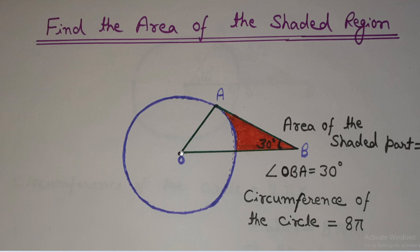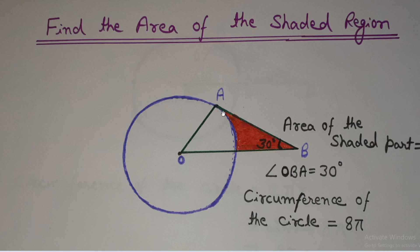Our first step is to calculate the area of this triangle. We know angle ABO is 30 degrees. We are given the circumference of the circle which equals 8π, and from this circumference we can calculate the radius of the circle. This radius will be one side of this triangle. We have one side and one angle, so we can use trigonometry to find other sides of the triangle. From that we will get the area of the triangle, and after getting the area of this triangle, we will calculate the area of this sector and subtract it from the triangle area to get the shaded region area.